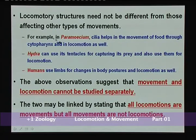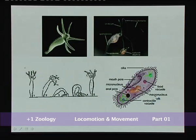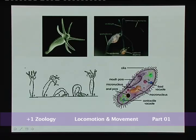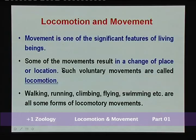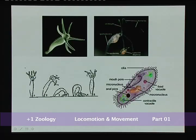Locomotory structures are also associated with various other types of movement. For example, in Paramecium, the cilia helps in the movement of food through cytopharynx and in locomotion as well. The cilia present in the cytopharynx also help in driving food into the cell. In the case of Hydra, it uses its tentacles for capturing its prey and also for locomotion.